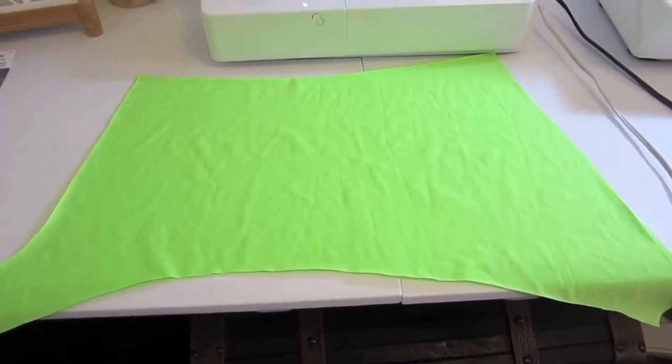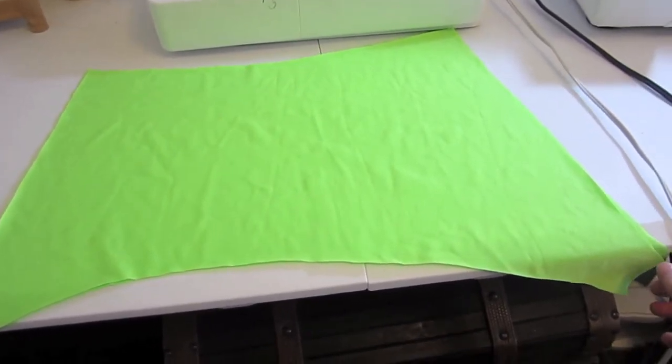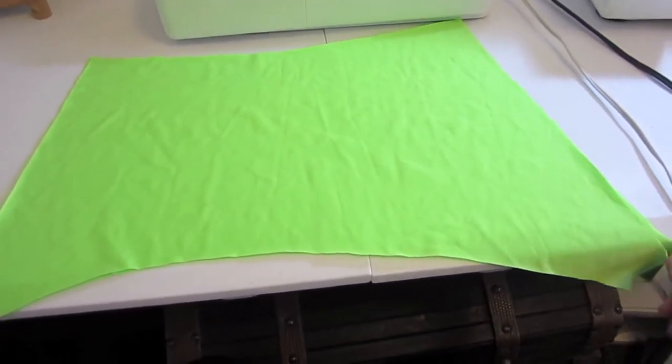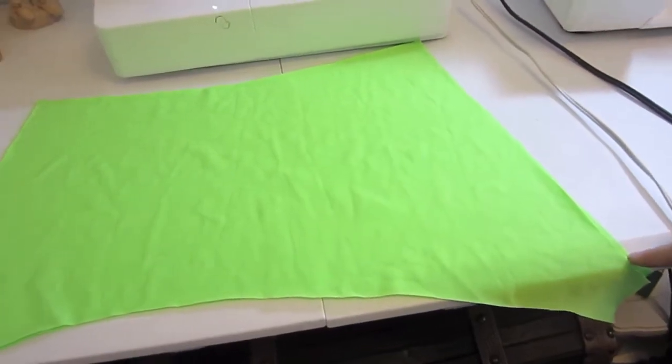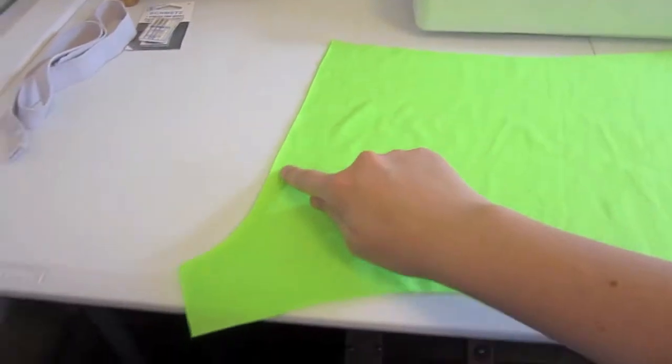Our next step is going to be sewing the two pieces together. So here I have the right sides together on top of each other and I'm going to sew down this side and then down this side.